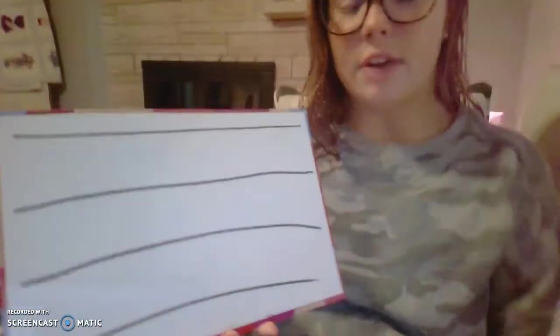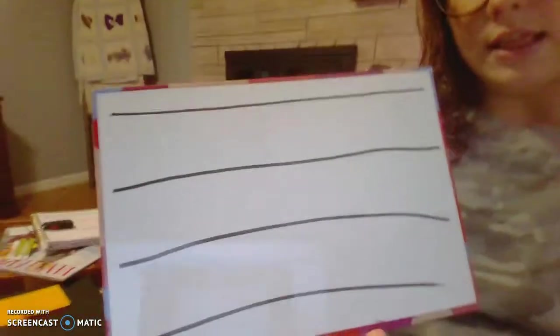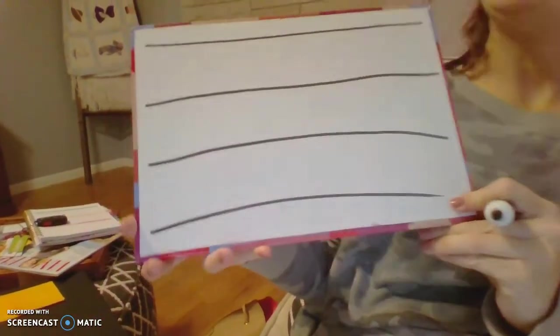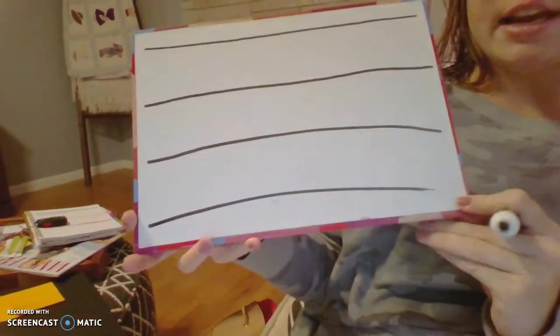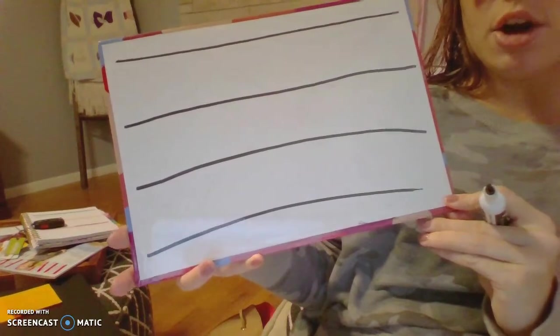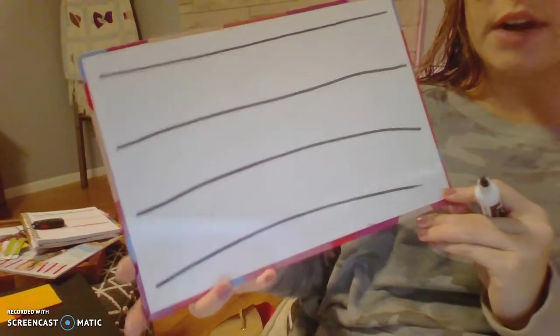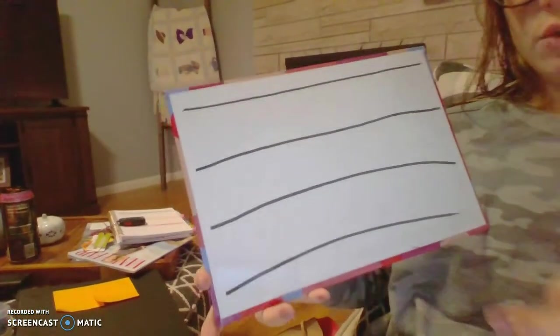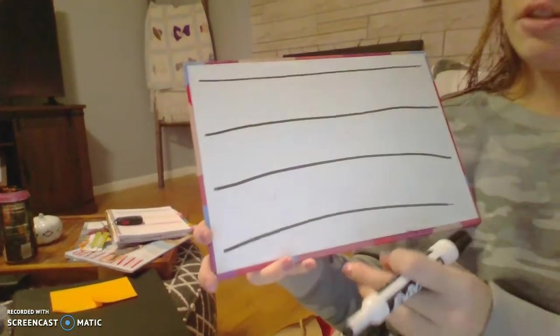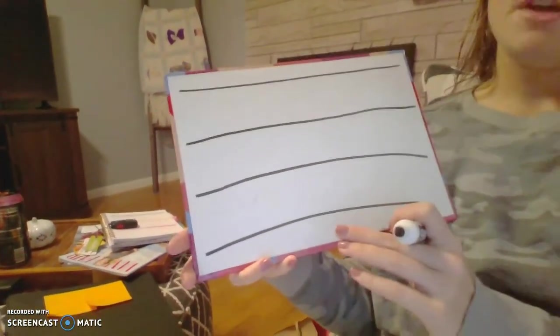All right, friends, today we are going to practice writing some specific letters. We're going to look at the letters B, K, and T, and I'm going to show you how to use the lines on your paper to write these letters, and I'm also going to explain to you the formation of the letters. So let's start with the letter B.